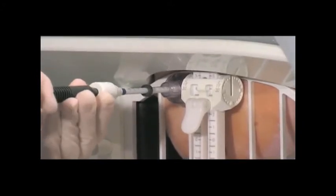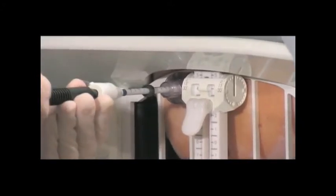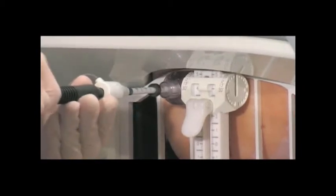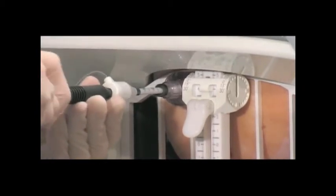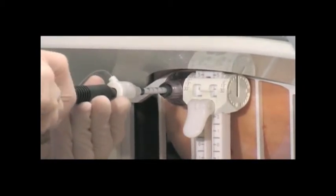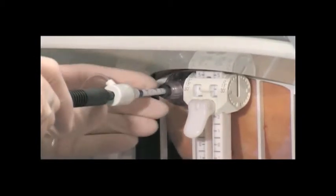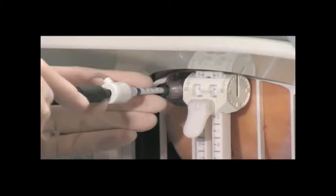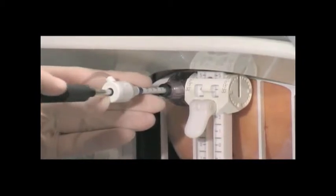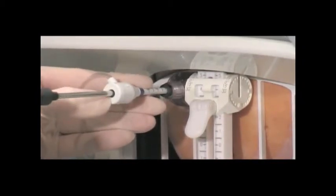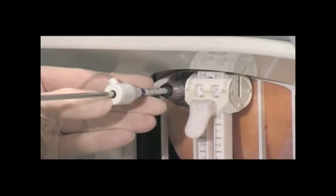Holding the sheath in place, use a continuous clockwise rotating motion to advance the stylet into the breast. This motion will help minimize tenting of the skin. Tighten the hub on the needle guide turret to the calculated depth. While continuing to hold the introducer sheath in place, remove the stylet.